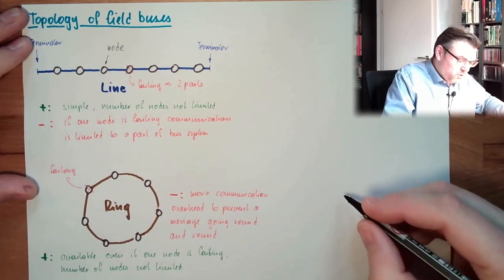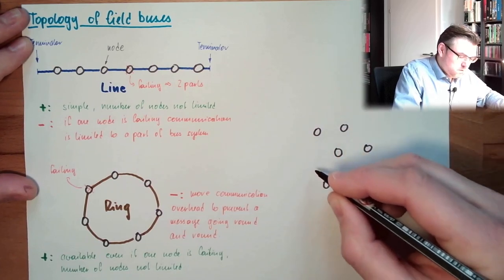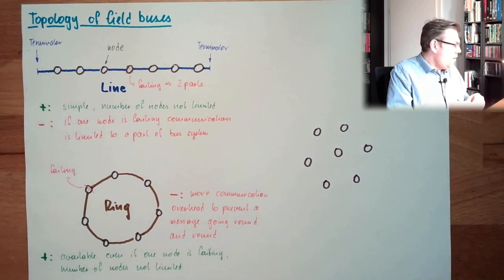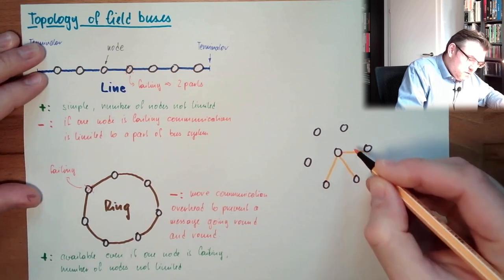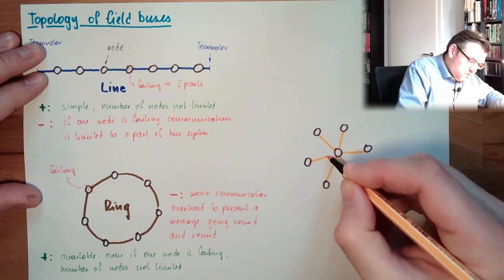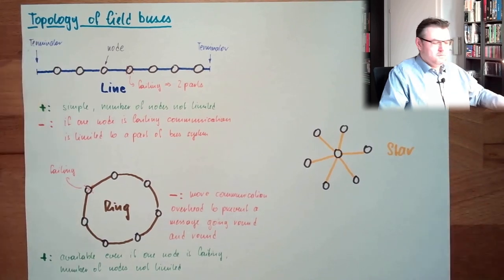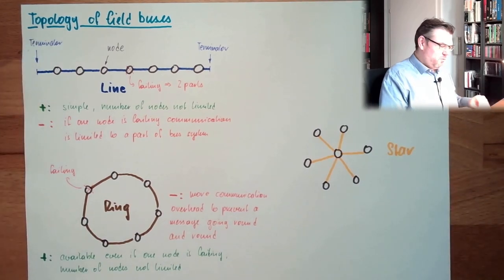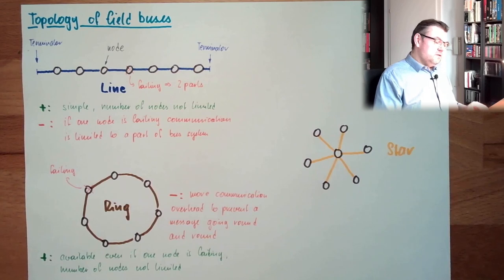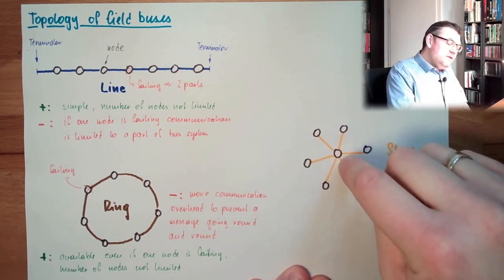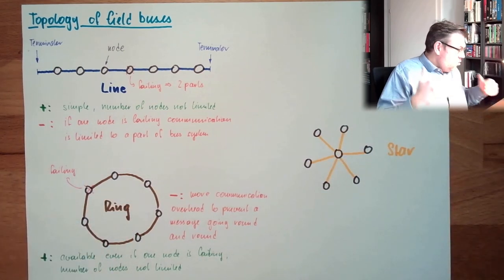And so, there is also a topology which is looking like that, where we are interconnected to each other like that. This is called a star. This is the star among the topologies. No, it's not the star among topologies. It's just because it looks like a star. So, there is a single node inside, the single node is managing the communication. So, the single node, and that's already the benefit.